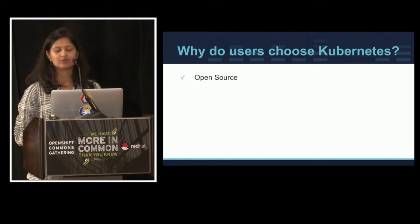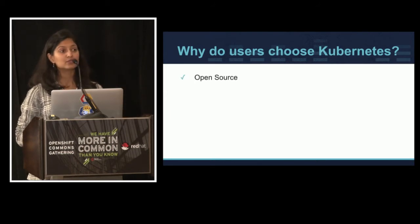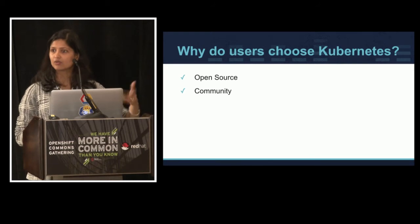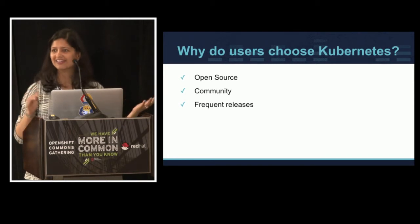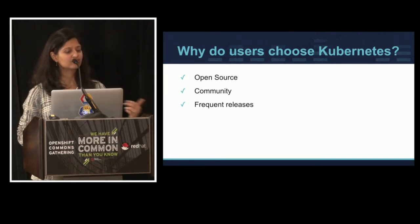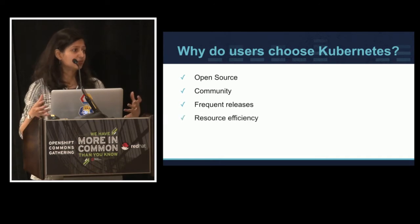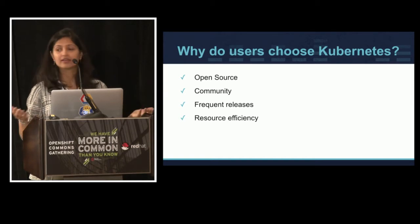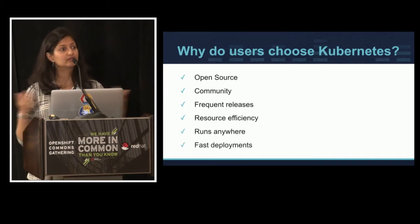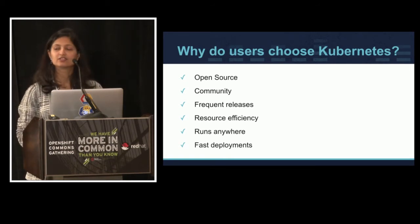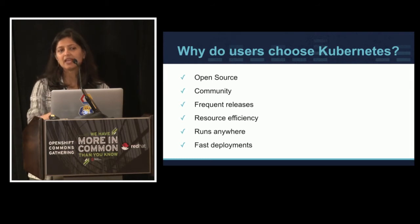So I started thinking about that and wrote down a few reasons I've heard in other talks. It's open source, so what you see is what you get. It's got a great community — Red Hat is part of it, there are lots of other companies, so you know it's a project that's going to go on. There are very frequent releases — every three months — which means you're getting new features. The technology makes it efficient to use your underlying hardware. It runs anywhere. And lastly, fast deployment. But I think there's a real reason behind all of this, more important than the others.